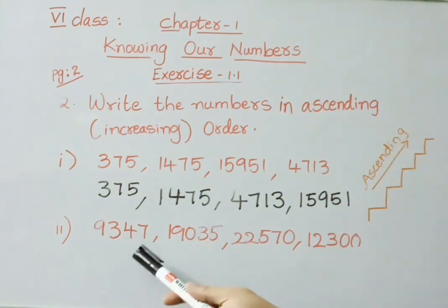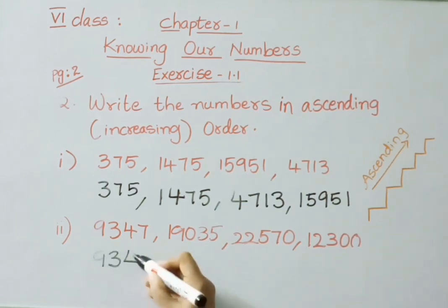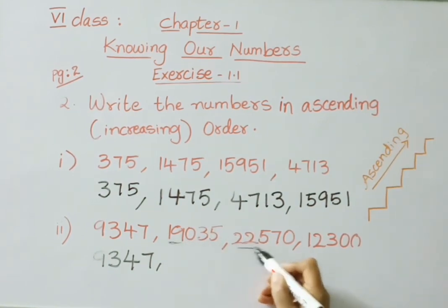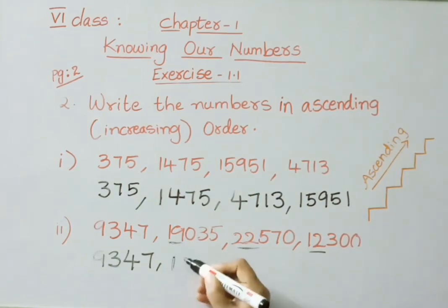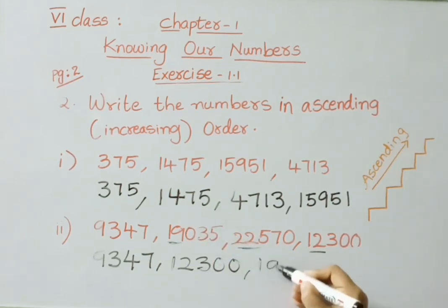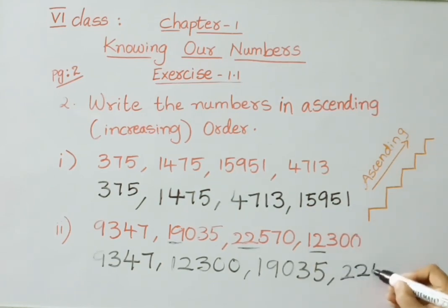See the second one: 9,347, 19,035, 22,570, and 12,300. Among these four, the 4-digit number 9,347 is the smallest — write it first. The remaining three are 5-digit numbers, so check their first two digits: 19, 22, and 12. The least is 12, so 12,300 is next. Then 19 is less than 22, so 19,035 comes next, and the last number is 22,570.